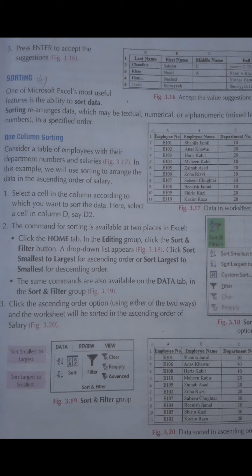یا Sort Largest to Smallest — بڑے سے چھوٹے کی طرف، یعنی descending order۔ ہم decide کرتے ہیں کہ ascending order کے لحاظ سے arrange کریں گے، تو column D کو select کر کے Sort Smallest to Largest پر click کریں گے۔ Figure number 3.20 کے اندر دیکھ سکتے ہیں کہ data چھوٹی value سے بڑی value کی طرف arrange ہو گیا — اس طرح one column sorting apply ہوتی ہے۔